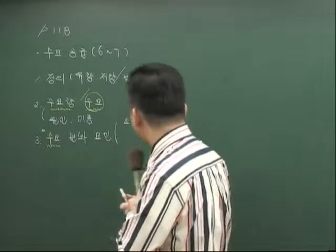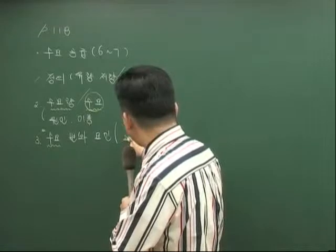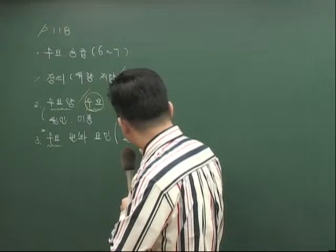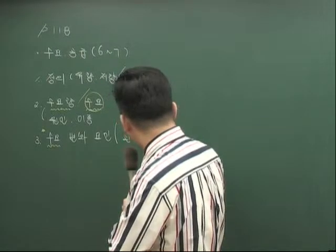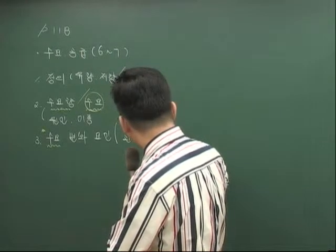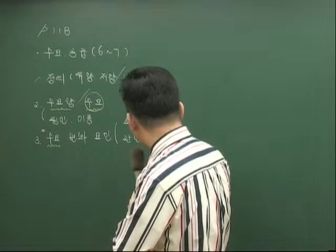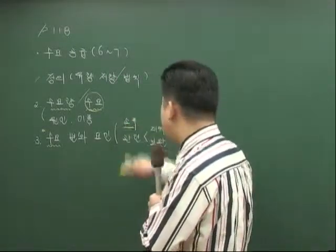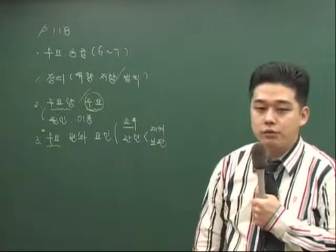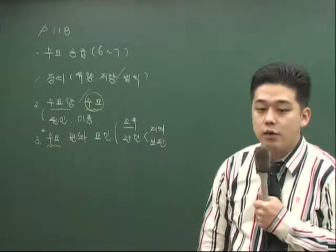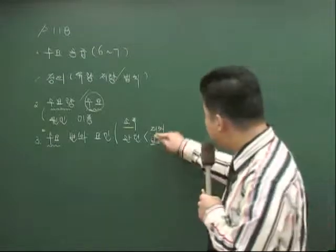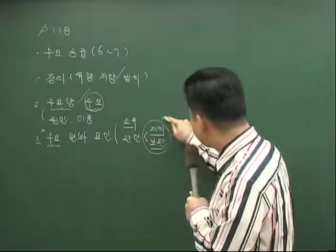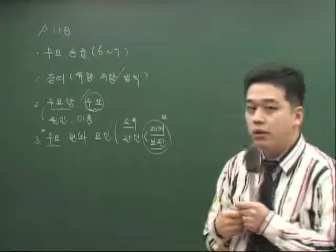소득에 관해 정상재, 열등재, 중간재를 따져볼 거고요. 그다음에 관련재와의 가격 변동이라고 해서 대체재의 가격과 보완재 가격을 볼 겁니다. 특히 이번 시험에서 대체재와 보완재는 상당히 중요합니다. 작년 시험에 소득이 나왔으니까 올해 시험에 소득이 또 나오기는 어렵고, 작년 시험에 대체재 보완재가 언급이 안 됐으니까 올해 시험에서는 반드시 대체재 보완재 쪽으로 접근하셔야 됩니다.